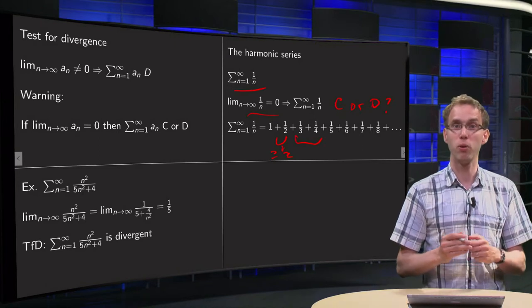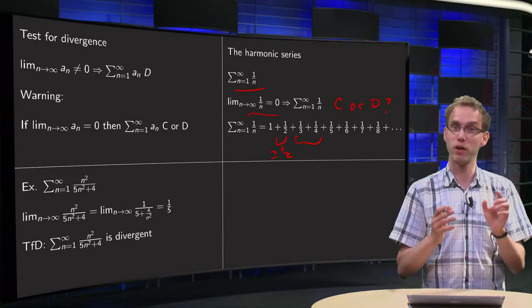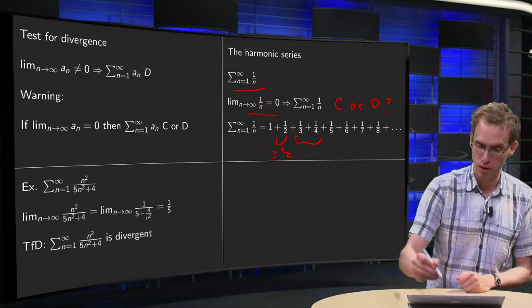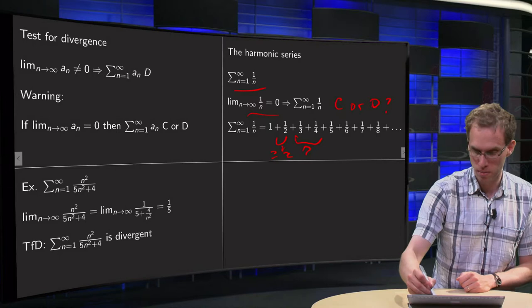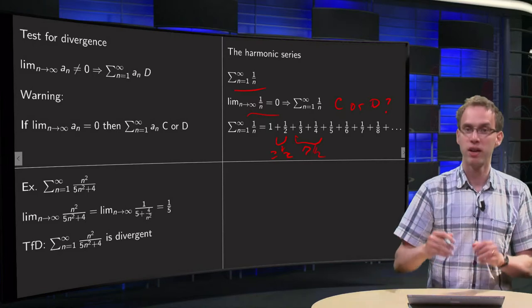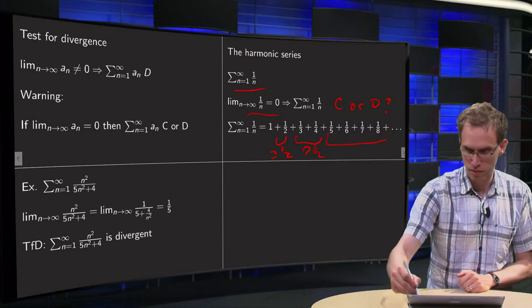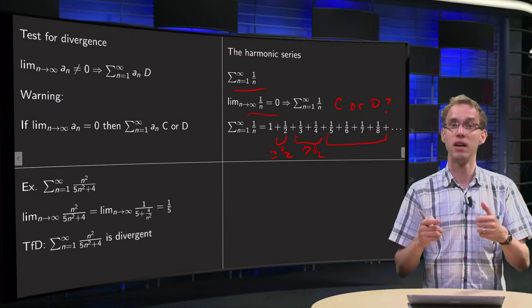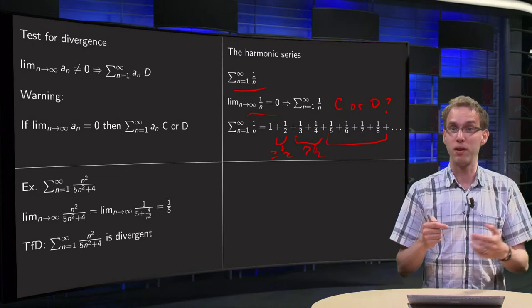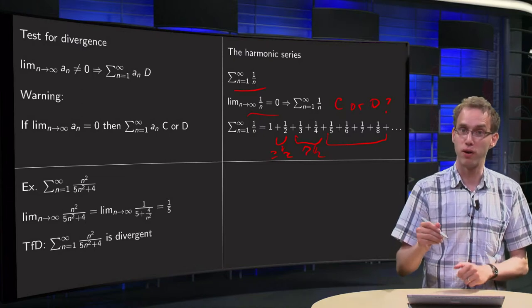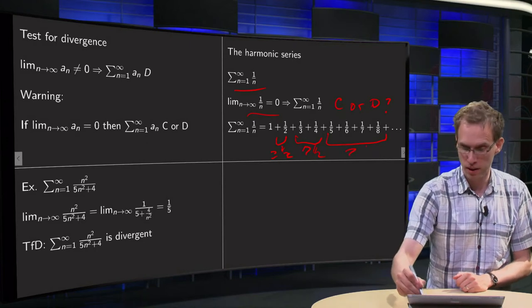1 over 3 plus 1 over 4: 1 over 3 is bigger than 1 over 4, so 1 over 3 plus 1 over 4 is bigger than 1/2. Then 1/5 plus 1/6 plus 1/7 plus 1/8, they are all bigger than 1 over 8, so they are bigger together than 4 over 8, which is also bigger than 1/2.